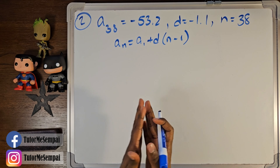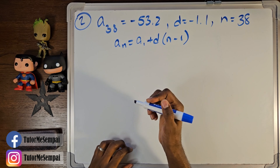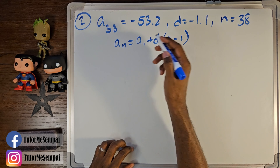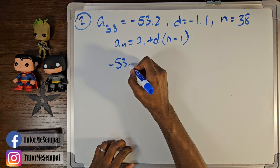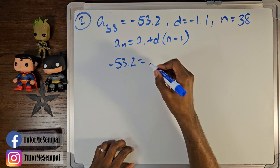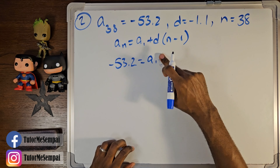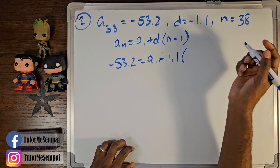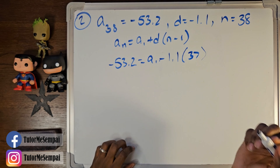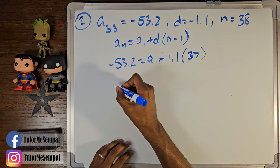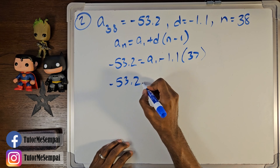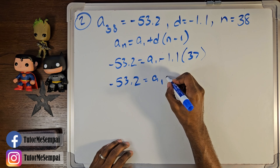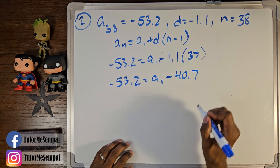Just like we did before, we're going to plug in everything that we know. We know our aₙ with n being 38, so our aₙ is going to be negative 53.2. We don't know what a₁ is. Our d is going to be negative 1.1, so we're going to have minus 1.1 times (38 − 1), which gives us 37. Multiplying those two gives us: negative 53.2 equals a₁ minus 40.7.